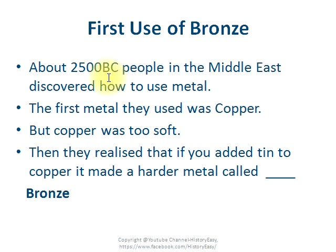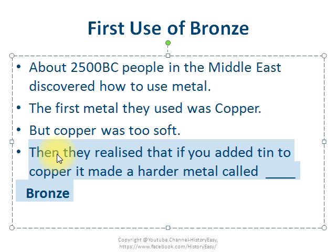The Bronze Age was a time period after the Stone Age, believed to be around 2500 BC. This was a time when people in the Middle East discovered how to use metal. The first metal they used was copper, but copper was too soft. They then realized that if you add tin into copper, it made a harder metal called bronze, and that's how the era known as the Bronze Age began.